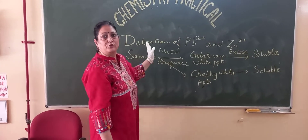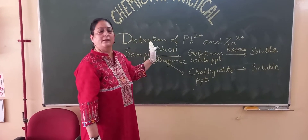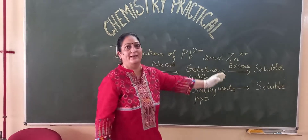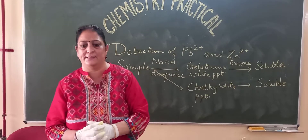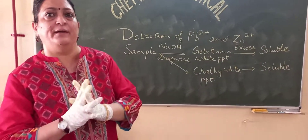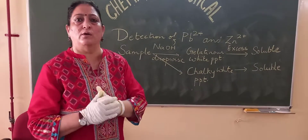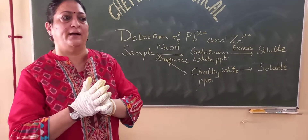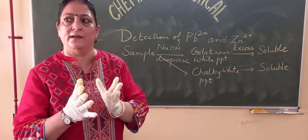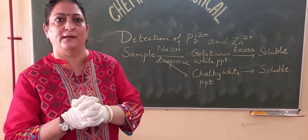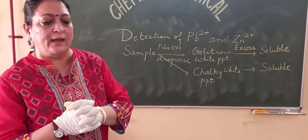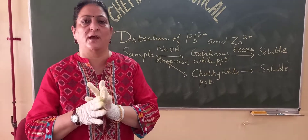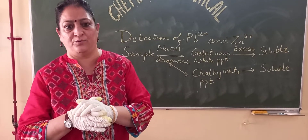Today we are going to learn the detection of lead ions and zinc ions. If we get a water-soluble salt and we want to find whether a lead cation or zinc cation is present, we can take help of reagents NaOH and NH4OH.